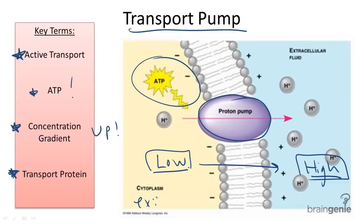One example illustrated in this picture of using a transport pump is our photosynthetic process of generating an electrochemical gradient on each side of the membrane.